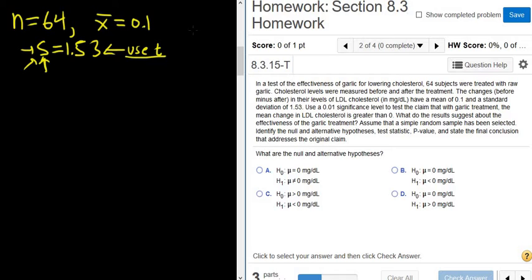Use a 0.01 significance level. That's going to be our alpha. To test the claim that with the garlic treatment, the mean change is greater than 0. Let's go through the five steps. So first we have our null and alternative hypotheses. This problem is talking about a single mean. So the symbol is mu. And then it says greater than 0. Then here we also have mu and this is always equal to 0.